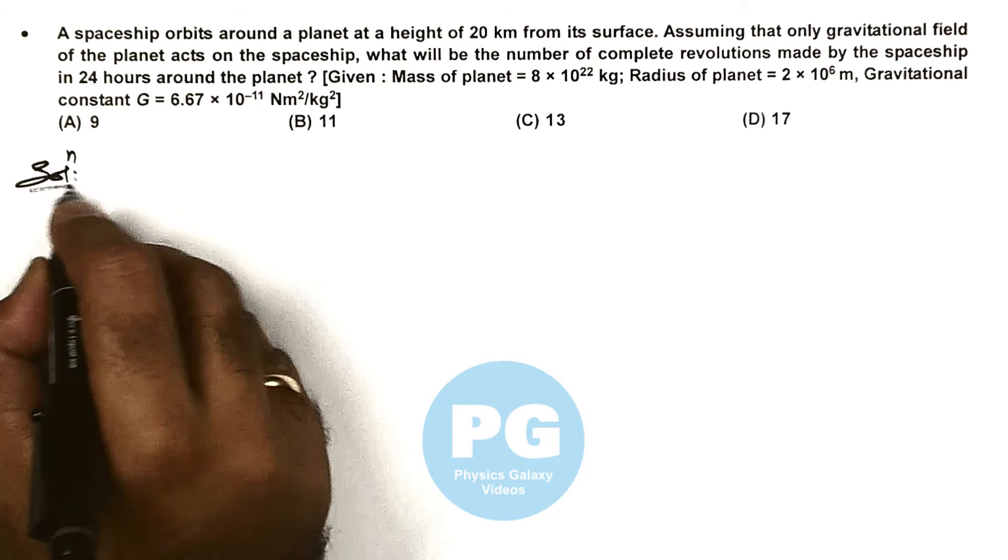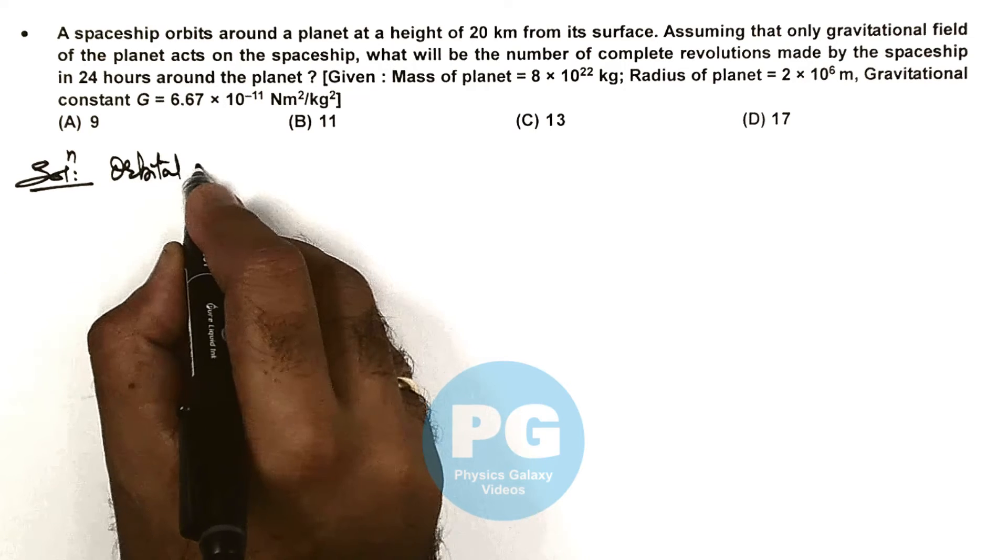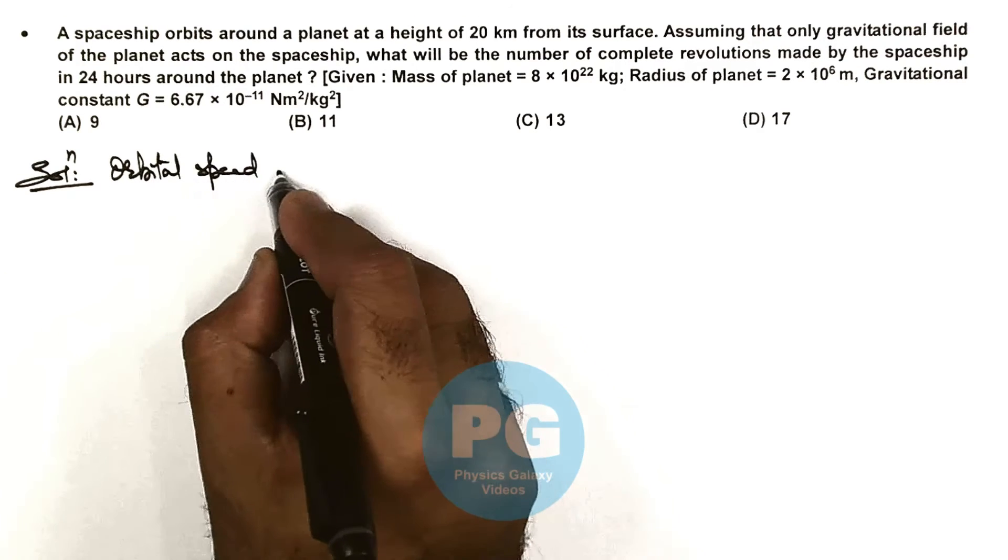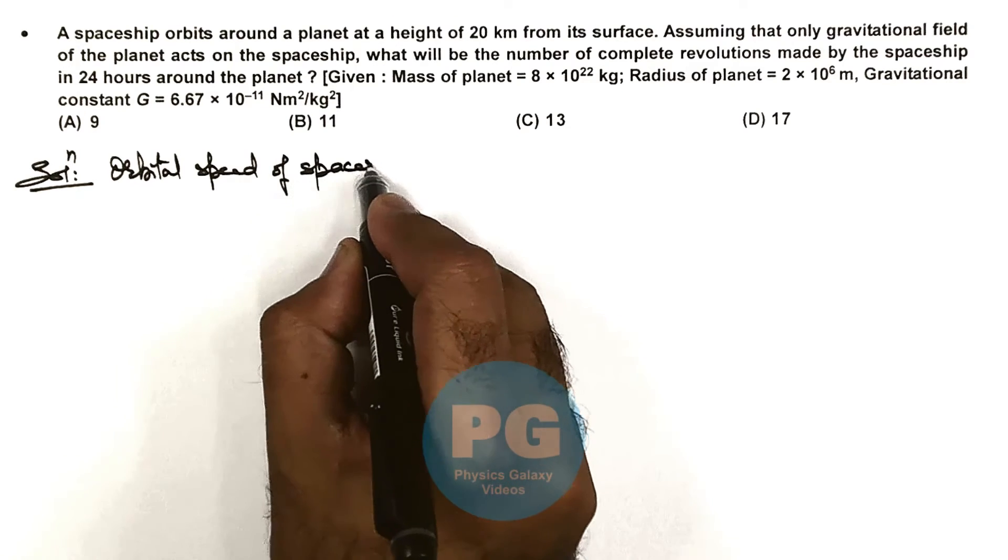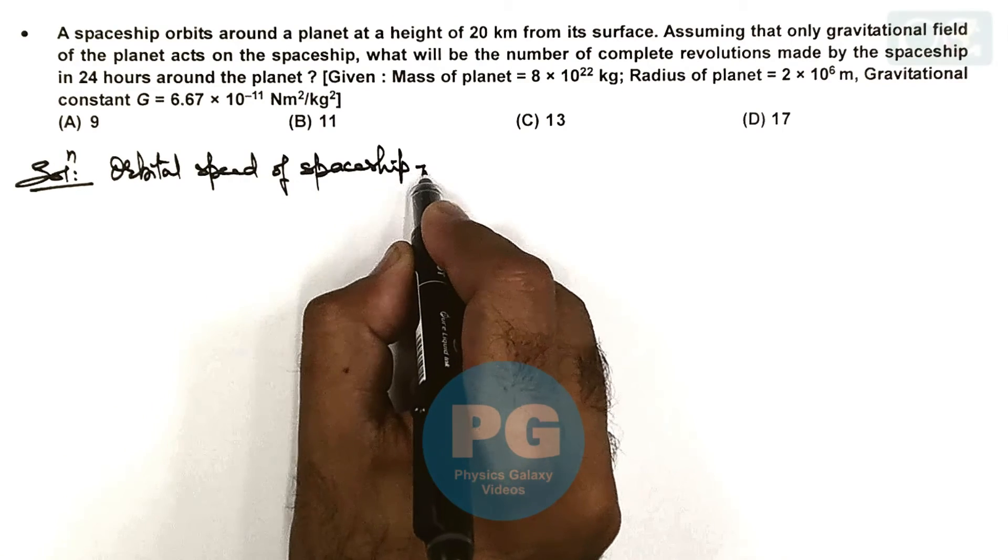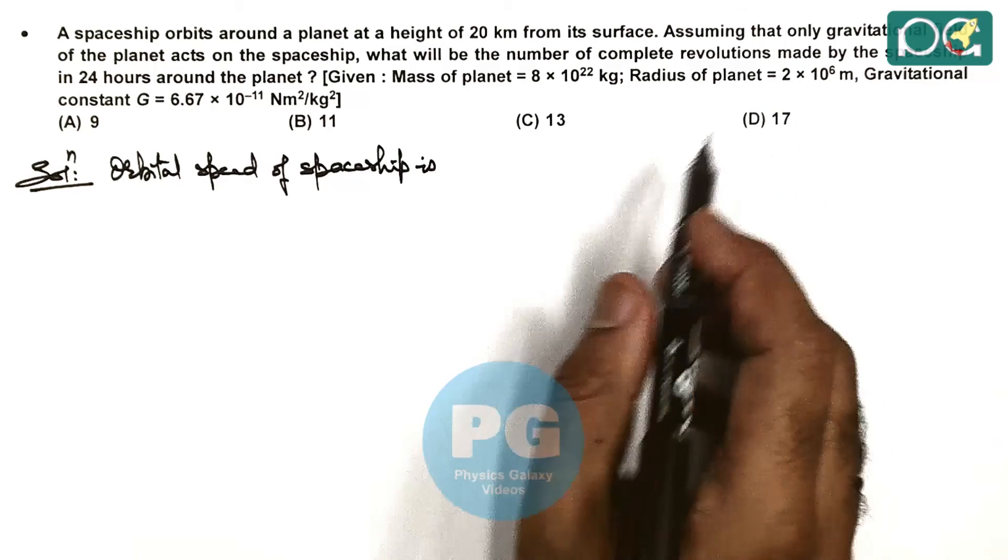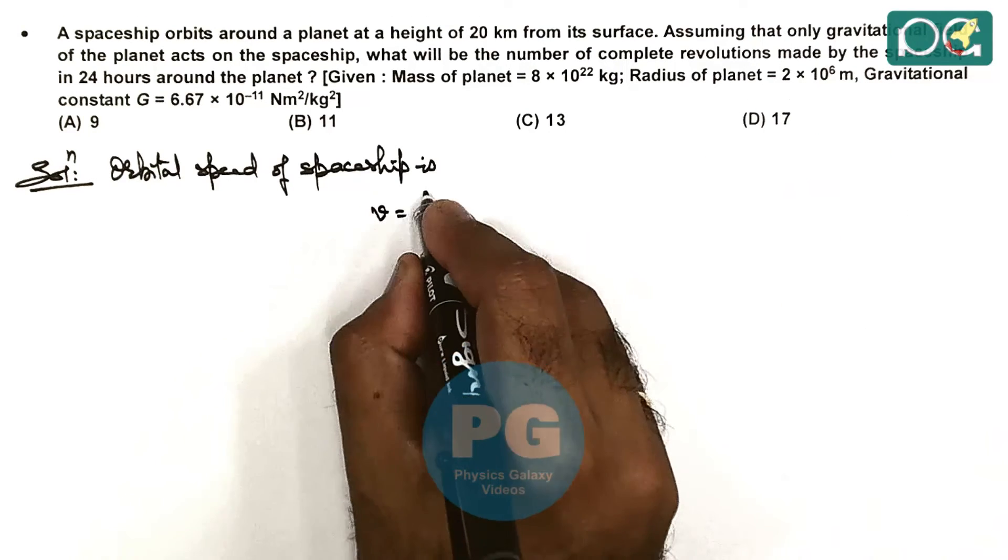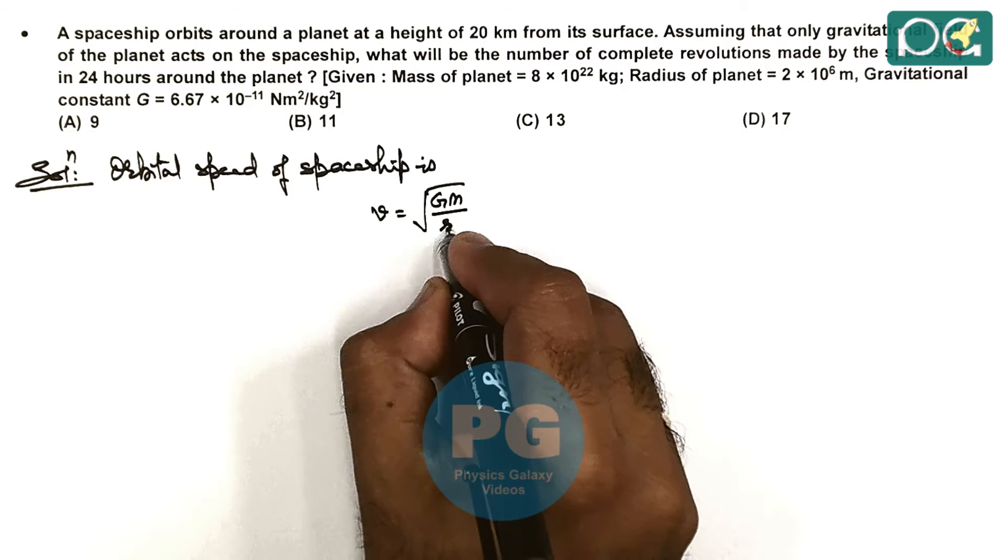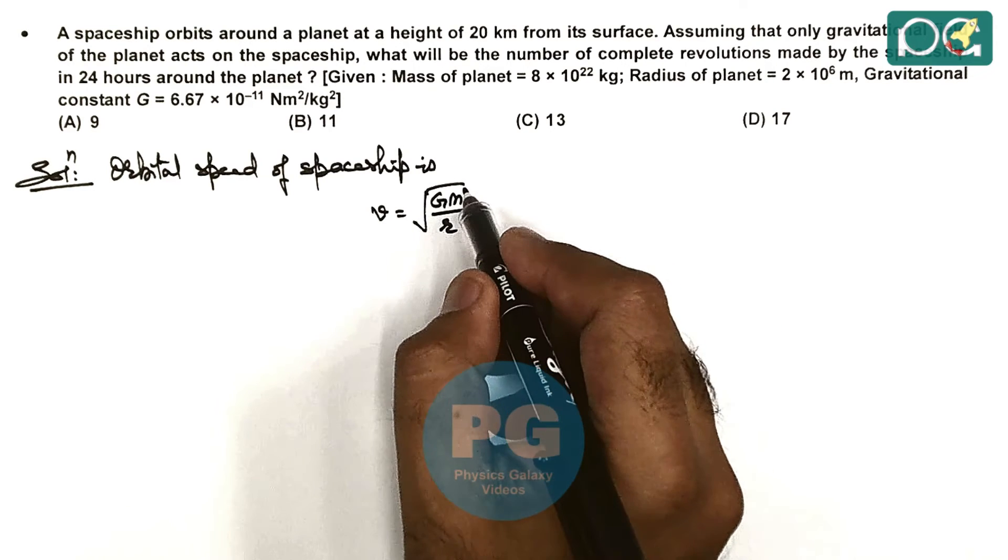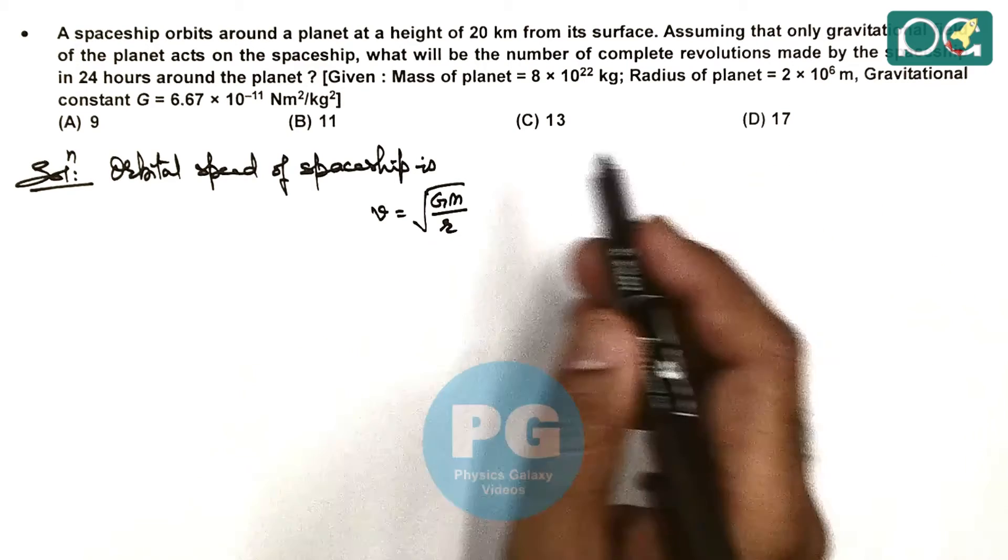First we can write the orbital speed of the spaceship. As it is only in the gravitational field of the planet, the orbital speed is √(GM/r), where M is the mass of the planet and r is the radius of the orbit in which the spaceship is moving.